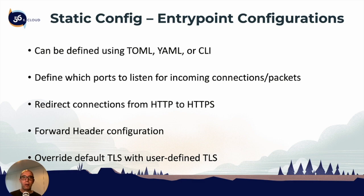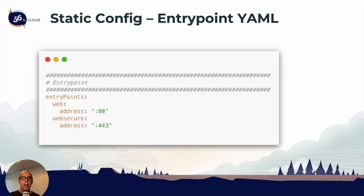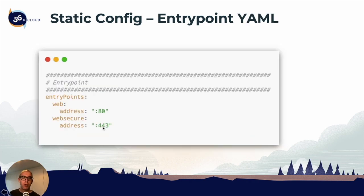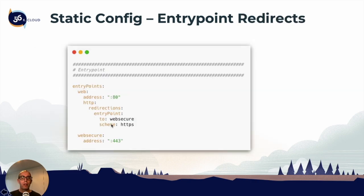Now, what does the entry point YAML look like? We extended the existing YAML — the static configuration has been extended to include entry points. You can see we have entry point 'web', which is a user-defined name, and we define the address as port 80. The second user-defined entry point is 'websecure' — again, you can name this whatever you want — and for websecure we're going to use port 443.